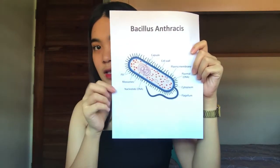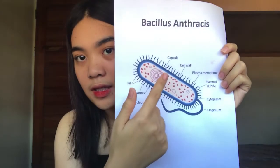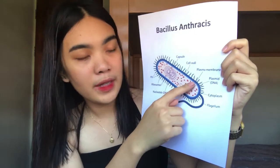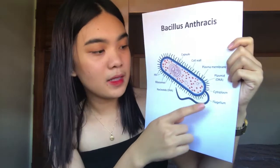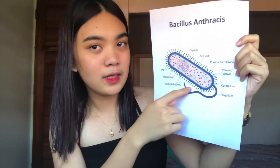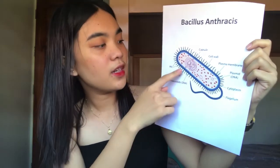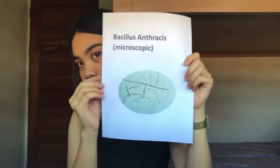So what should Bacillus anthracis look like? So this is a Bacillus anthracis. These are the parts of Bacillus anthracis. You can see the capsule, the cell wall, the plasma membrane, the plasmid or the DNA, the cytoplasm, the flagellum which is the tail, the nucleotide DNA, the ribosomes, and the pili. So Bacillus anthracis looks like this, but it is microscopic as you can see.